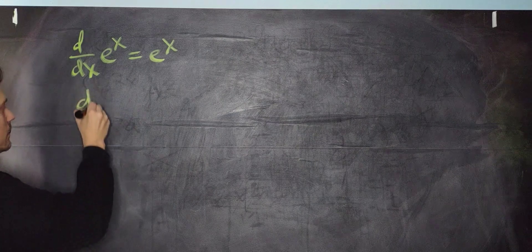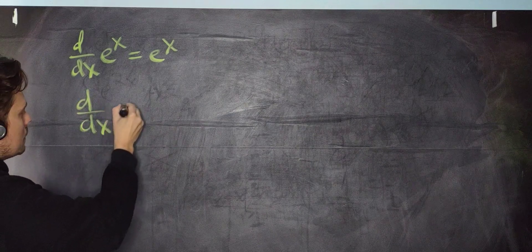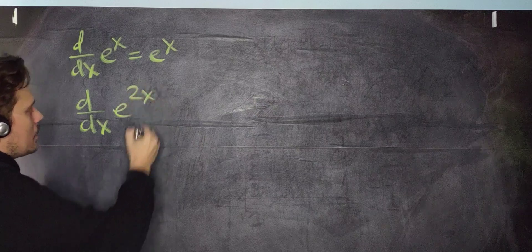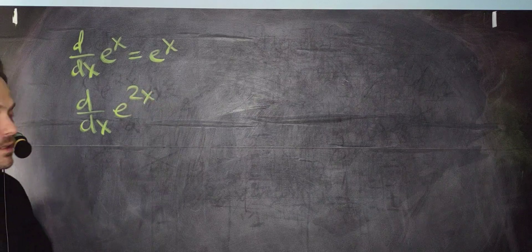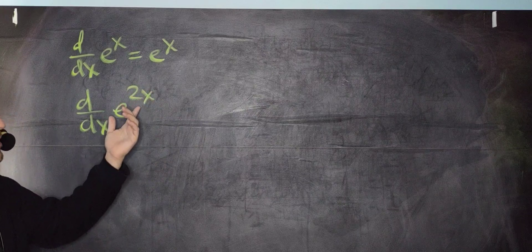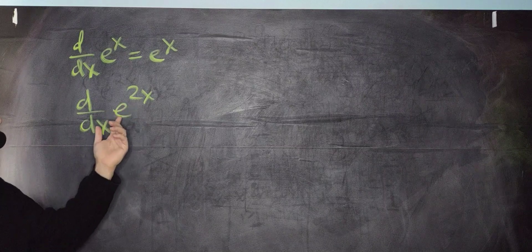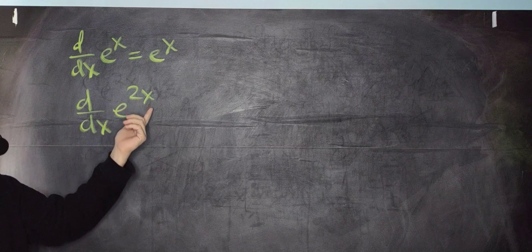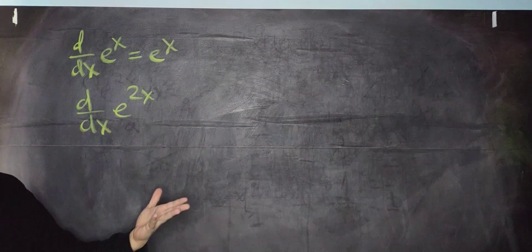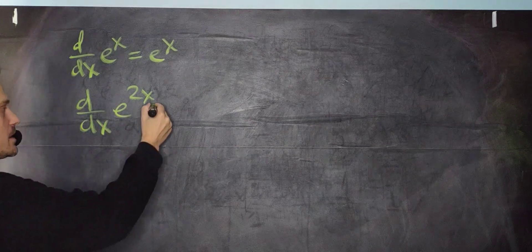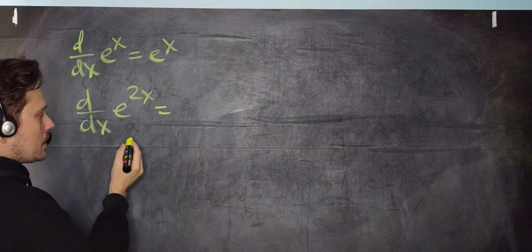And then the derivative, for example, with respect to x of something like e to the 2x, now we want to work on this. This is already a little bit different because when x goes in, first you multiply it by 2 and then you exponentiate. So this is actually, for that reason, going to need the chain rule. All right, so that means the following. You will say it's going to be, how do you do it? You take this, whatever this is, you copy it unchanged.